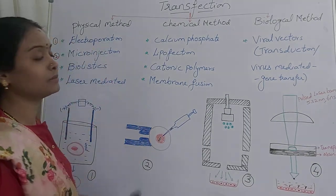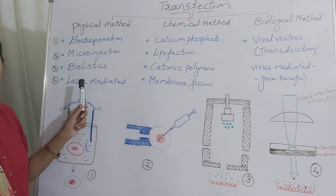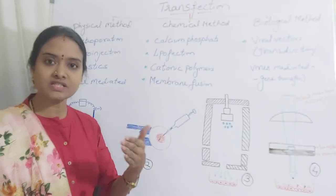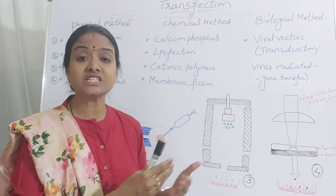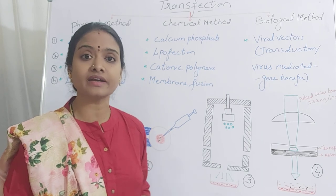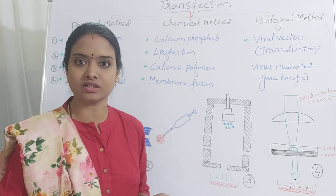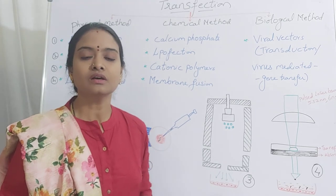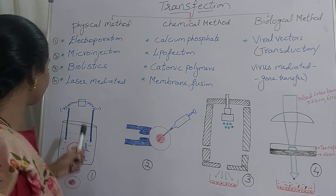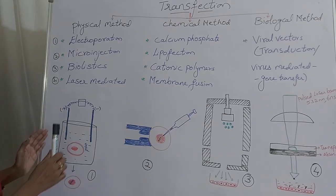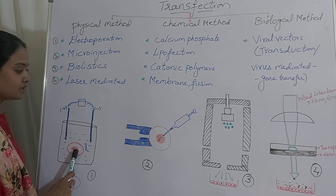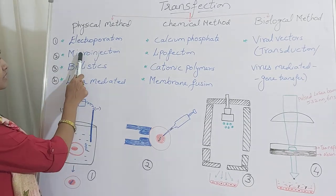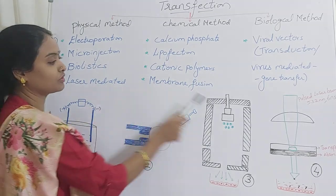In physical methods, instruments are used to introduce the DNA into the target cell. In the last class we discussed the four steps: first, identify the animal having the gene of interest; second, isolate that particular gene; third, introduce it into the target cell; and fourth, obtain a new trait in the organism. The four physical techniques are: electroporation, micro injection, biolistic, and laser mediated.